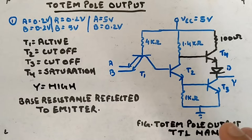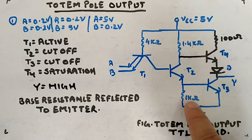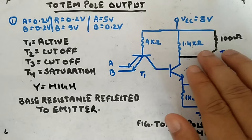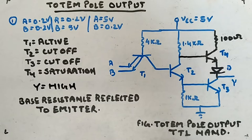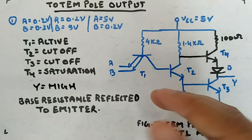What I am trying to tell you is about the totem pole output, which will remove the shortcomings of the basic TTL NAND gate. I have marked in black what changes I have done; the rest of the circuit is as it is. Remember these values are fixed standard values: 4 kilohm, 100 ohm, 1.4 kilohm, 1 kilohm, and VCC is 5 volts. We have transistors T1, T2, T3, T4, and here a diode and transistor combination, and this will remove our shortcomings of the basic TTL NAND gate.